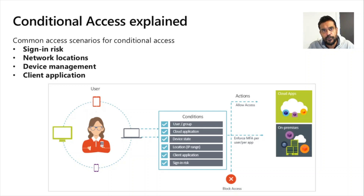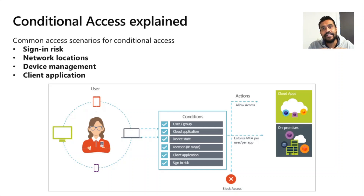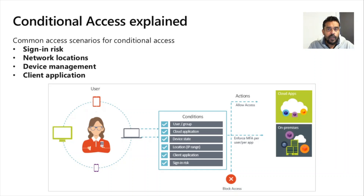For example, we can assess users' sign-in risk. In my previous video I covered Azure AD Identity Protection, where users are categorized based on risk level — high risk, medium risk, and low risk users. Within Conditional Access we can use these Azure AD Identity Protection capabilities.